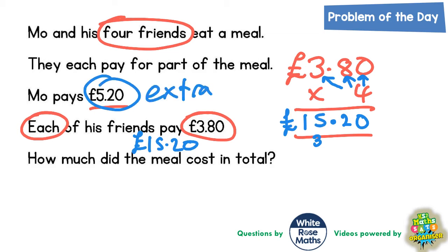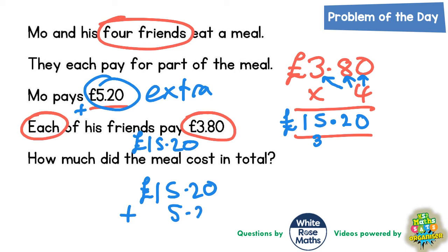But of course Mo is also paying an extra £5.20. So what we're going to do is add that £5.20 on to the £15.20. We need to do a new calculation: £15.20 add the extra £5.20.